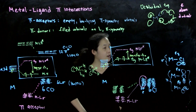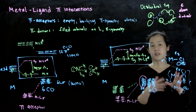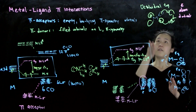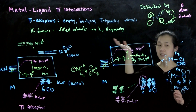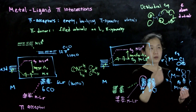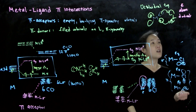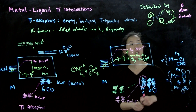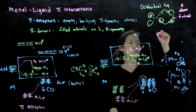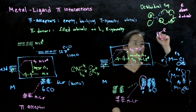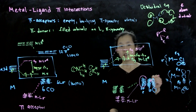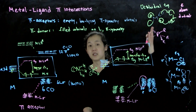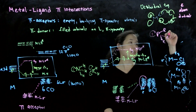Pi donors include ligands with lone pairs — halides, hydroxide, etc. Pi acceptors include CO (very common, with its empty pi star orbitals), cyanide (CN⁻), and phosphines. Phosphines look like amines — they have that lone pair for sigma donation — but phosphines also have empty d orbitals that can act as pi star, so they're also pi acceptors.